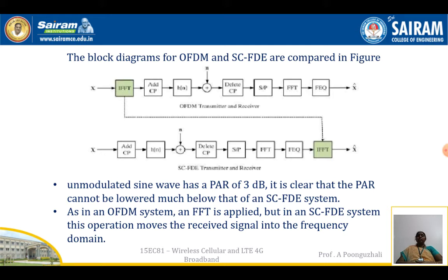The unmodulated sine wave has a peak-to-average ratio of 3 decibels, and the peak-to-average ratio must be low in a single carrier FDE system. In your OFDM system, the FFT is applied at the receiver. But in single carrier FDE, the received signal is transformed into the frequency domain and sent to a frequency equalizer.